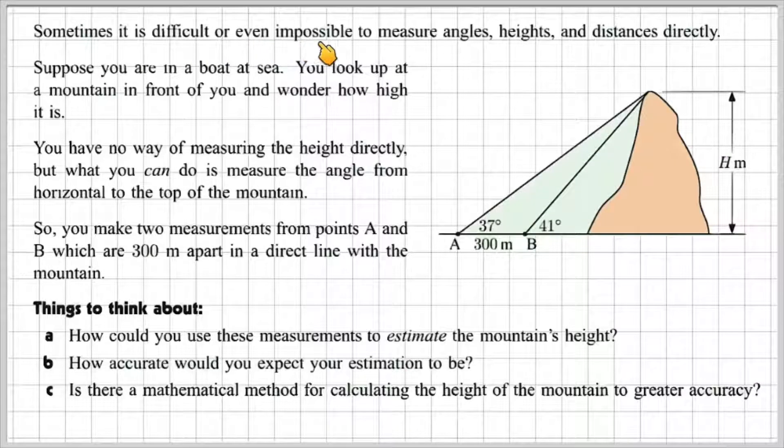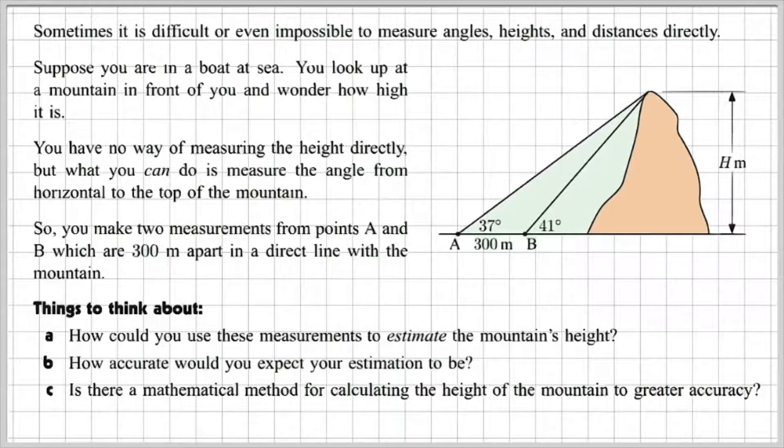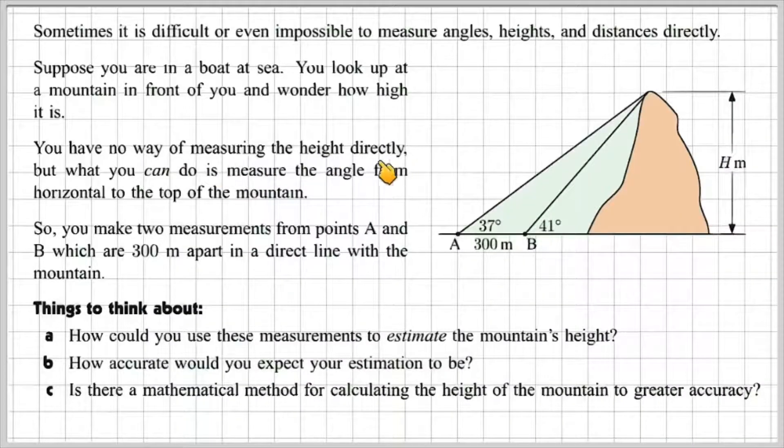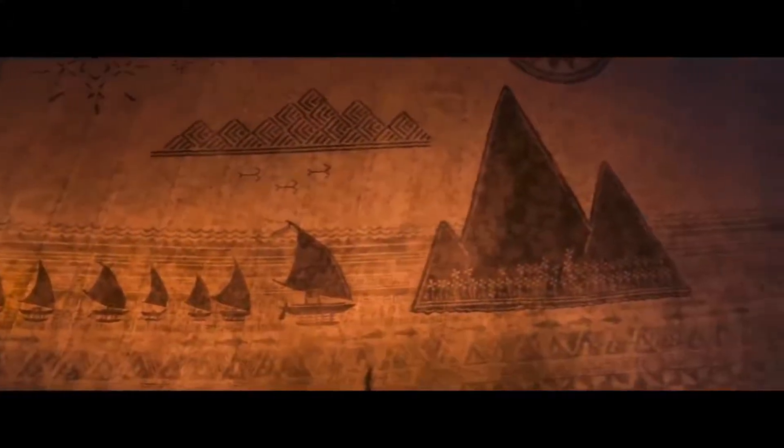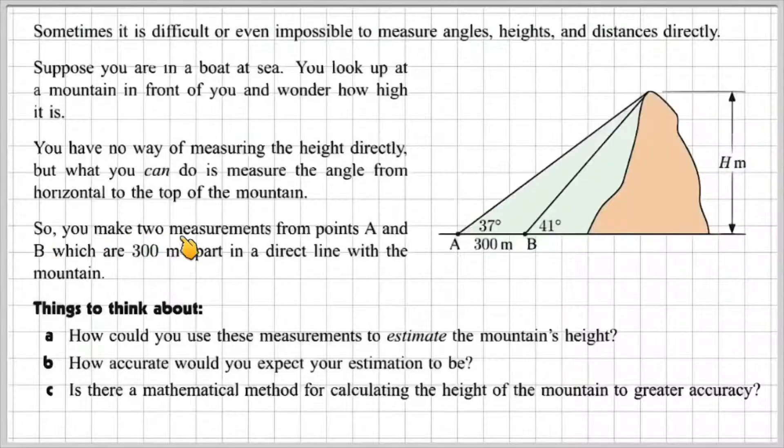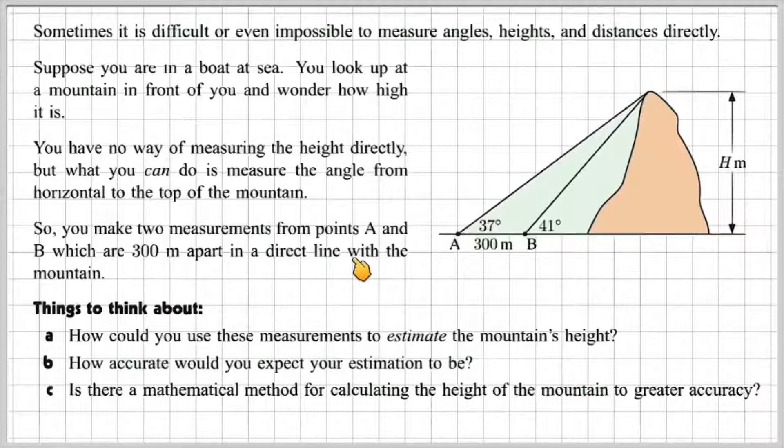Sometimes it's difficult or even impossible to measure angles, heights and distances directly. Suppose you are in a boat at sea. You look up at a mountain in front of you and you wonder how high is it. You have no way of measuring the height directly, but what you can do is measure the angle from the horizontal to the top of the mountain. So you make two measurements from points A and B which are 300m apart in the direct line with the mountain.